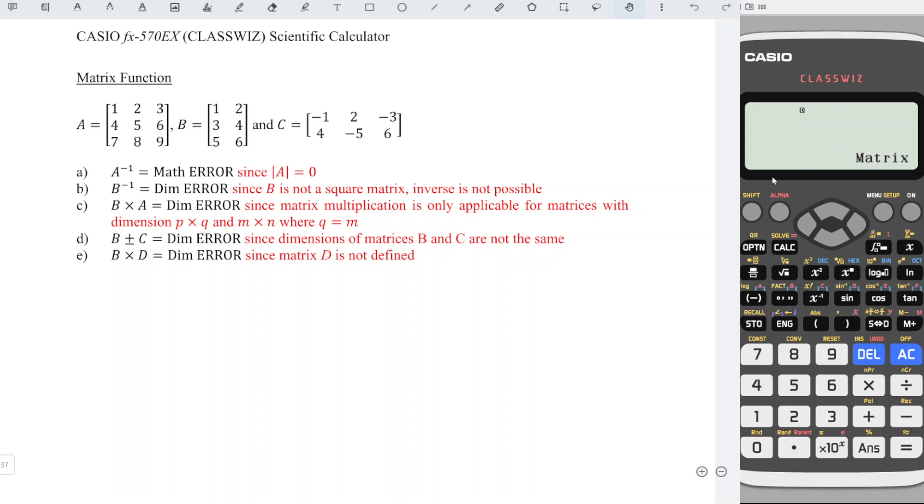Press AC to perform calculation. Part A, obtain the inverse of matrix A. To get matrix A, press option, choose matrix A number 3 and we press inverse and we obtain math error.